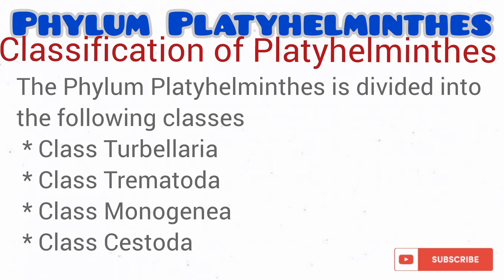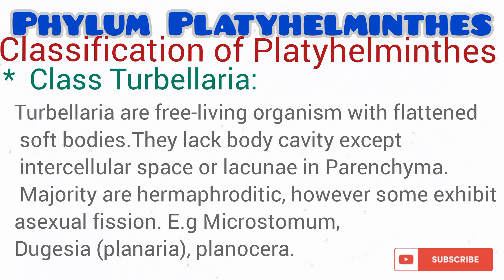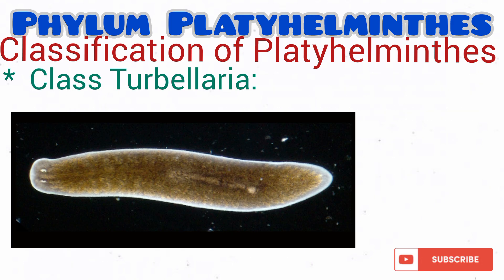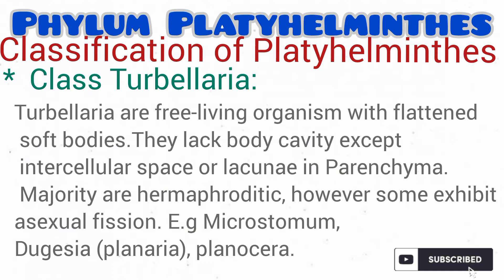Let's talk about Class Turbellaria. The turbellarians possess flat, soft bodies like every other Platyhelminthes, and they are usually free-living. Examples include the planaria, as you can see on the screen, the microstomum, planoceras, and others. They are acoelomate, which means they lack a body cavity, and the majority are actually hermaphroditic.